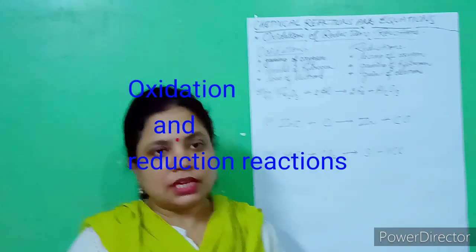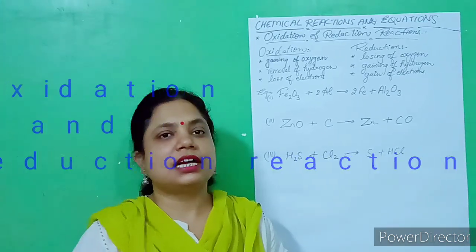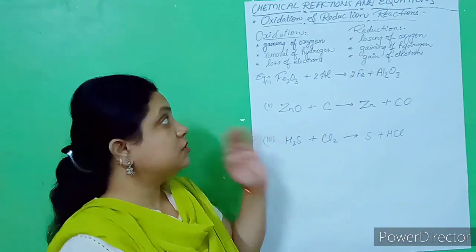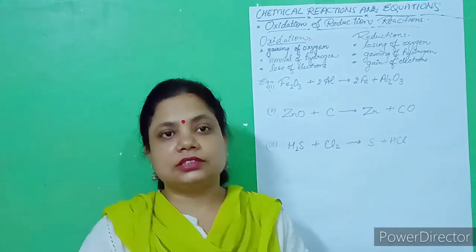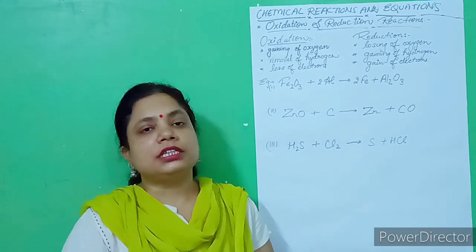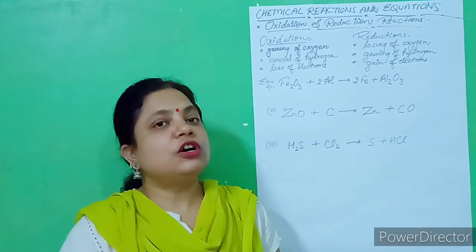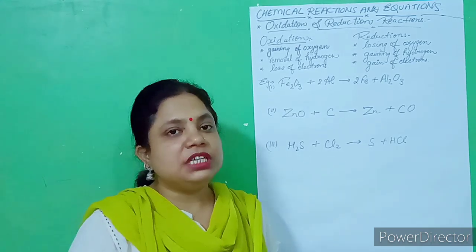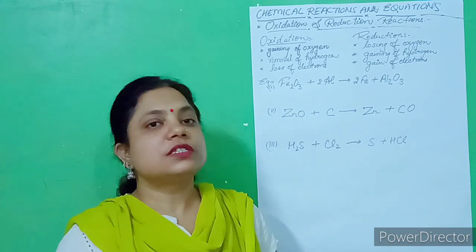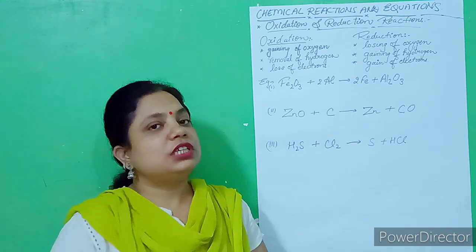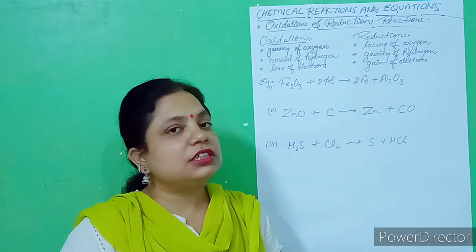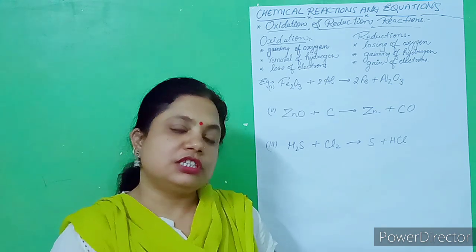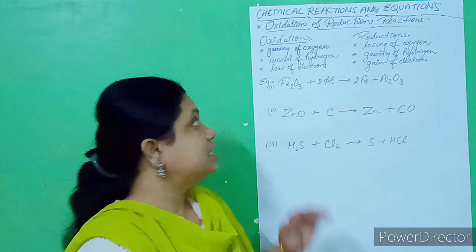Hello students, welcome to you all. Let us start the topic: oxidation and reduction reactions. When both oxidation and reduction occur together, it is known as a redox reaction. Redox is formed by 'red' and 'ox' — red means reduction and ox means oxidation.